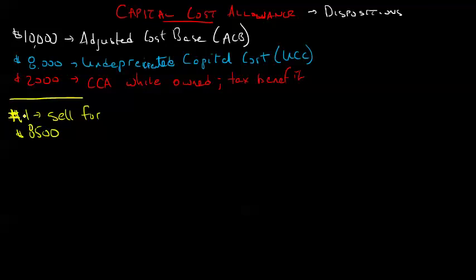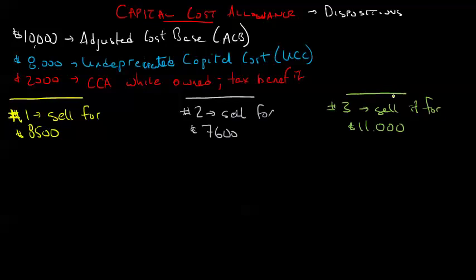In scenario number two, we'll see what happens if we sell it for less than that UCC. Let's say we sell it for $7,600, for less than its undepreciated capital cost. And in scenario number three, we're going to sell it for, and this would be most unusual, let's say $11,000.